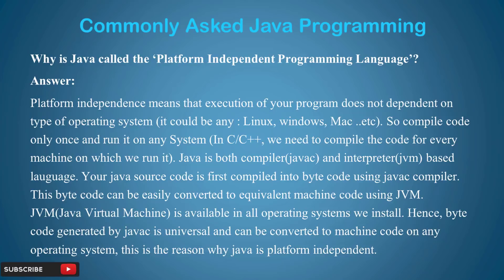The .class file — the bytecode that is generated — is not dependent on the OS. It can be run on Windows or Mac. This is not the case with C: in C the .obj file generated after compiling is OS-specific. Java is platform independent, meaning it can run on any OS, unlike C and C++. Hence, bytecode generated by Java is universal and can be converted to machine code on any OS. That is why Java is called platform independent.